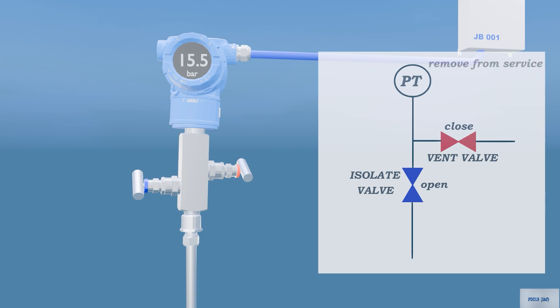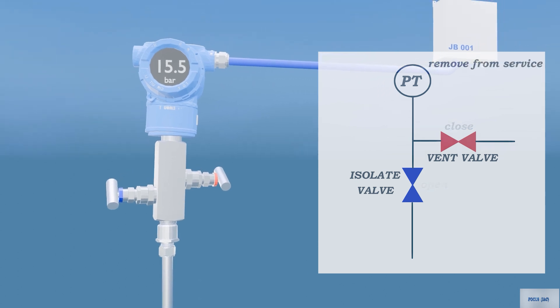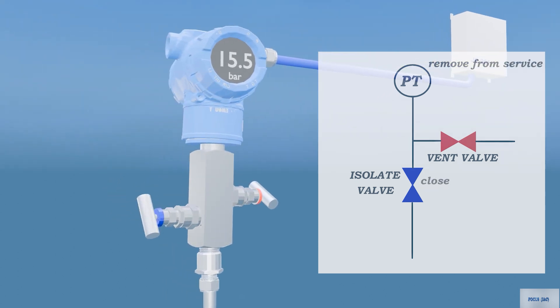Remove from service. Close the isolate valve by rotating the valve in the clockwise direction.